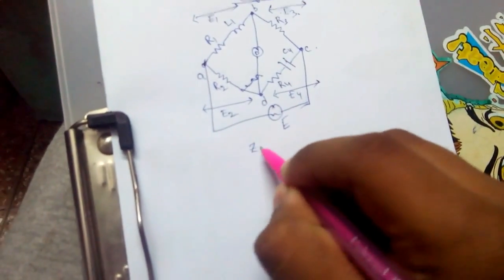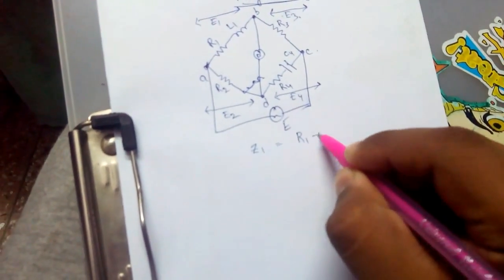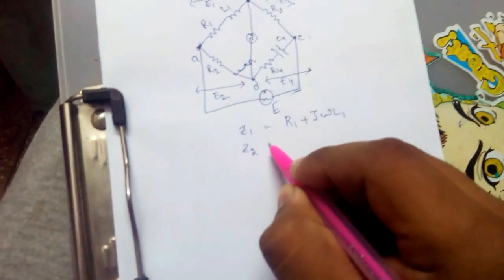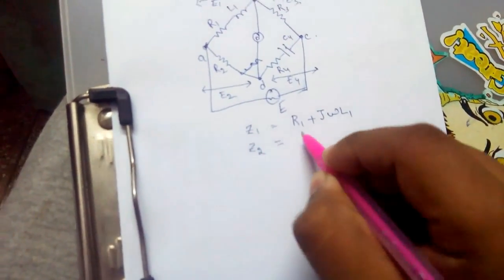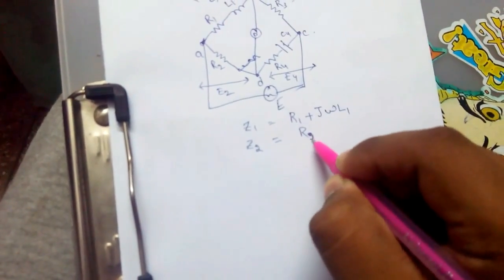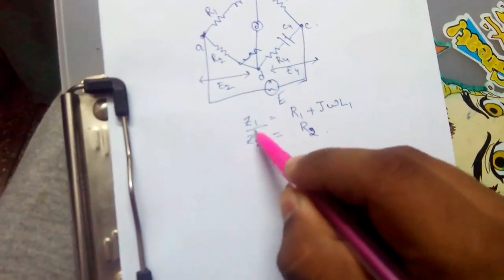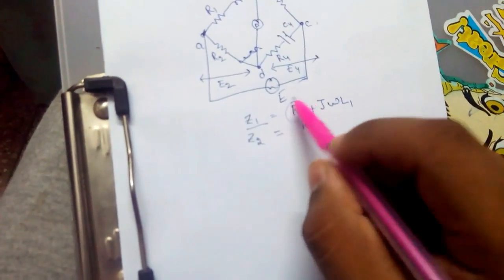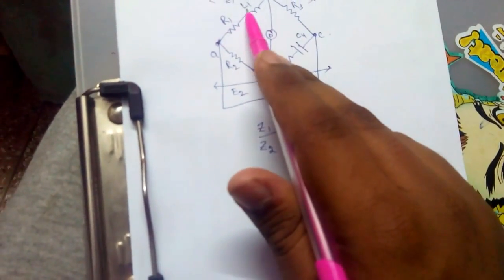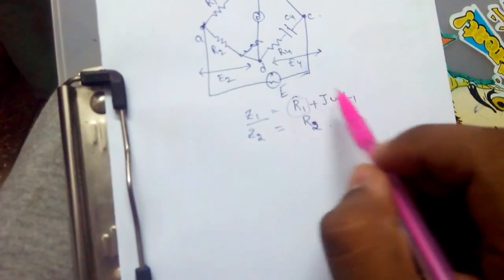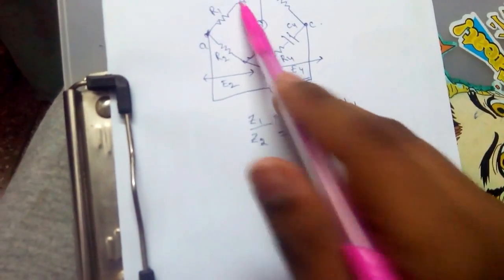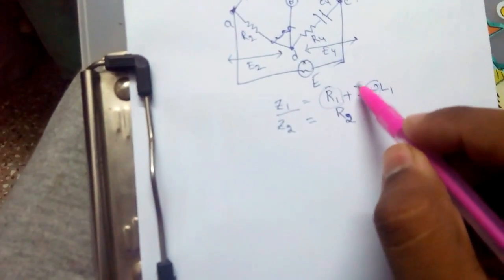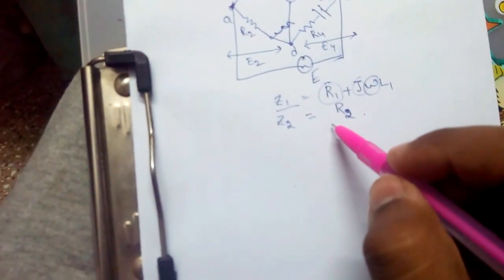Now defining the individual impedances. Z1 is equals to R1 plus J omega L1, where R1 is the resistance impedance and J omega L1 is the inductive impedance, where omega is the frequency factor and J is the imaginary part.